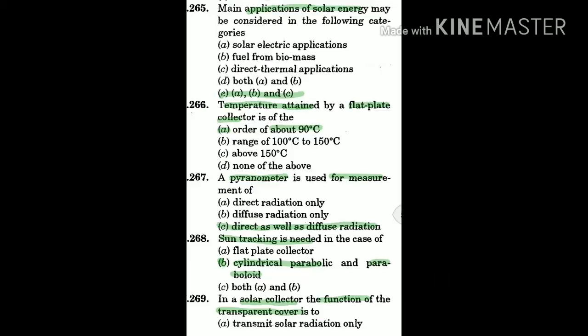Question 265: Main applications of solar energy may be considered in the following categories — the answer is all of A, B, and C: A) solar electric applications, B) fuel from biomass, C) direct thermal applications. All three are the main applications of solar energy.